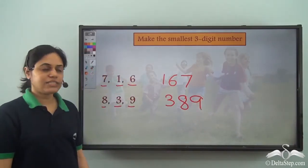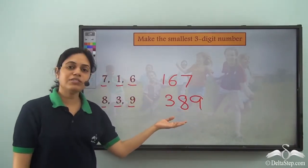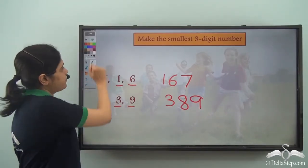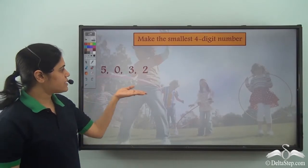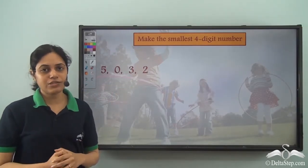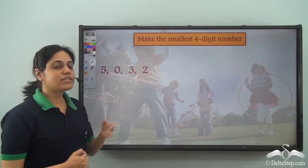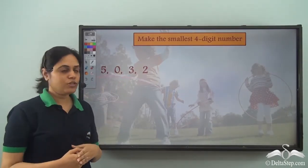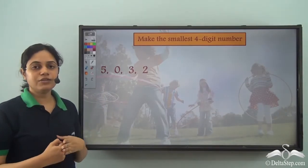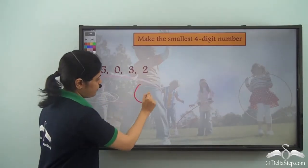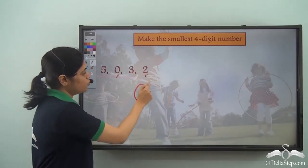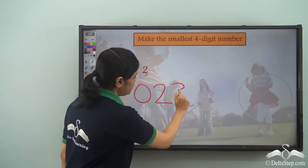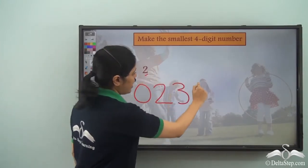So 389 is the smallest three-digit number using those digits. Now let us make the smallest four-digit number using digits 5, 0, 3, 2. Arranging in ascending order gives 0, 2, 3, 5 — but 0235 is not a four-digit number. The smallest digit is 0, followed by 2, then 3, then 5.